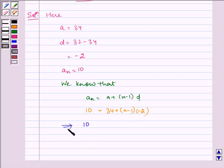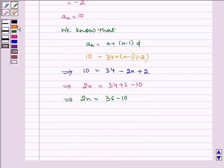We can write, it implies 10 is equal to 34 minus 2N plus 2. Which implies 2N is equal to 34 plus 2 minus 10. Which implies 2N is equal to 36 minus 10. Which implies 2N is equal to 26. Which implies N is equal to 13.